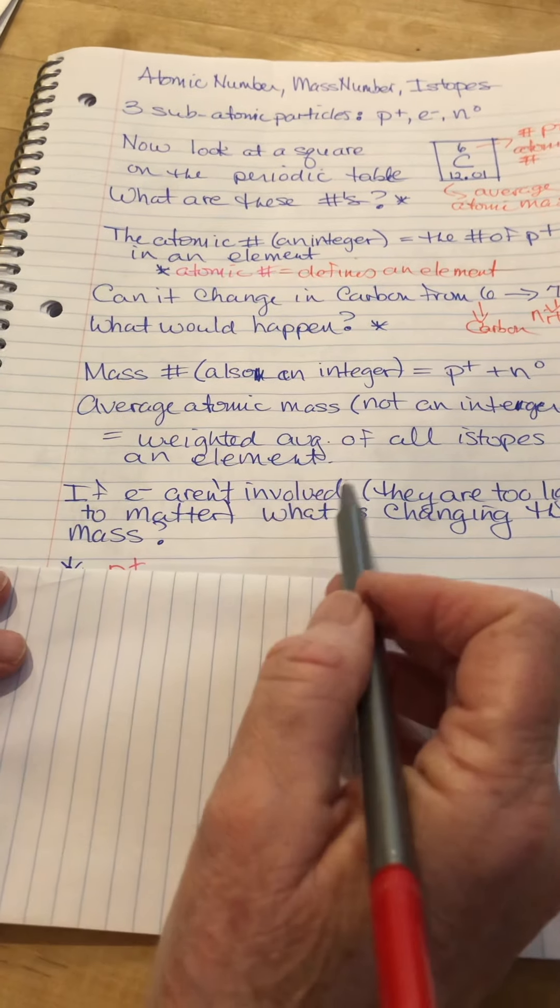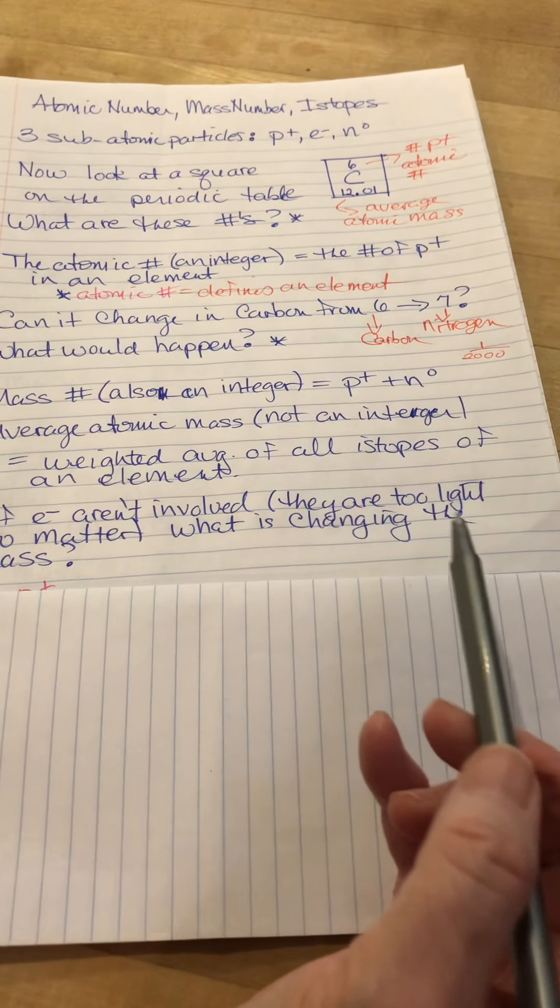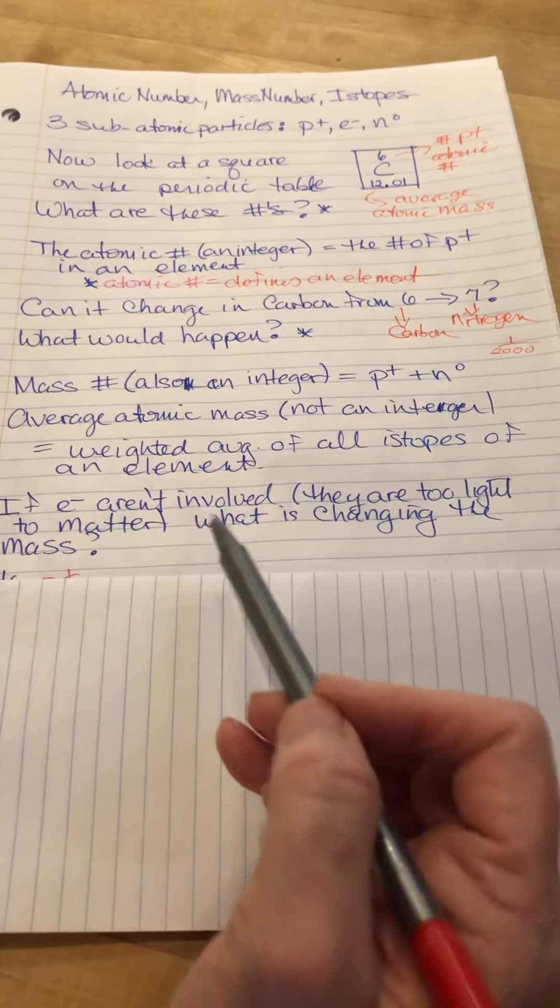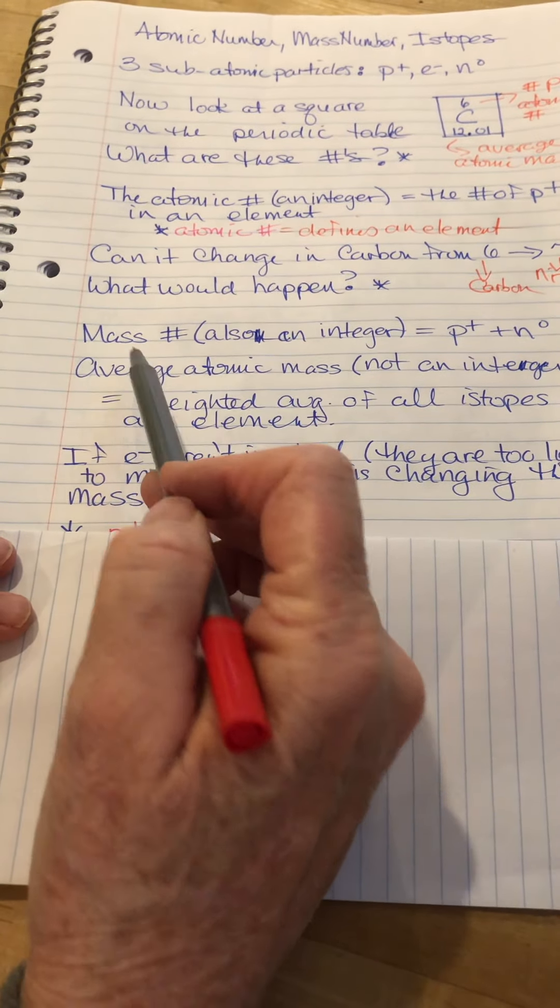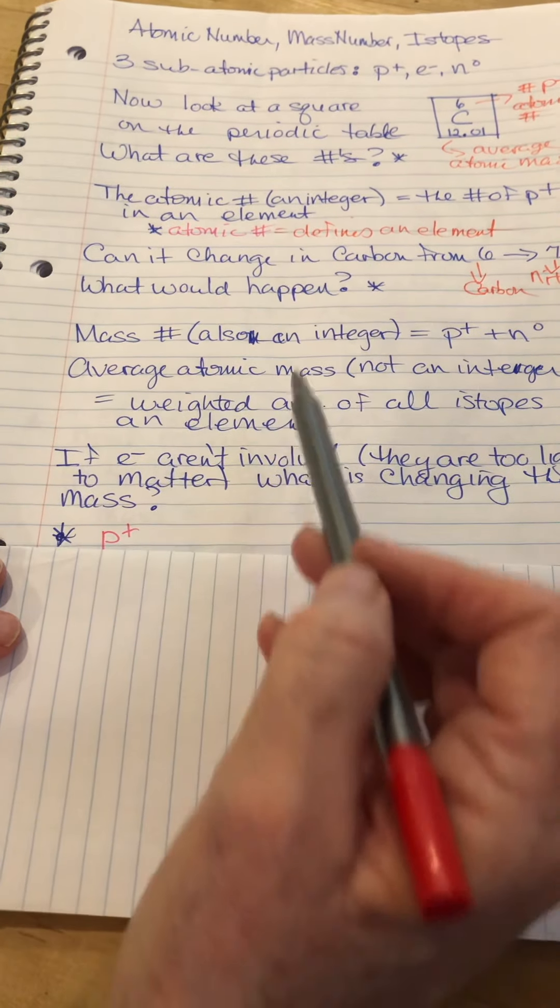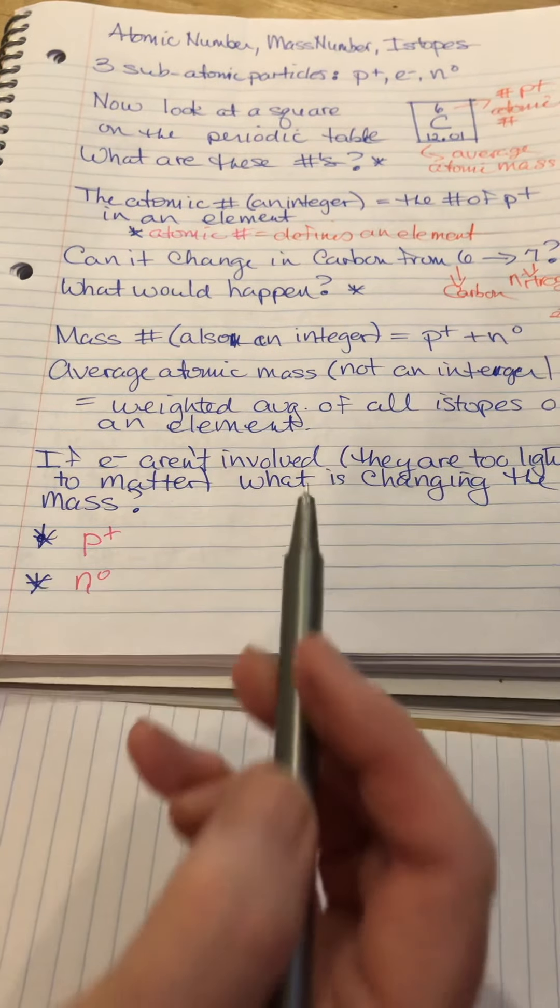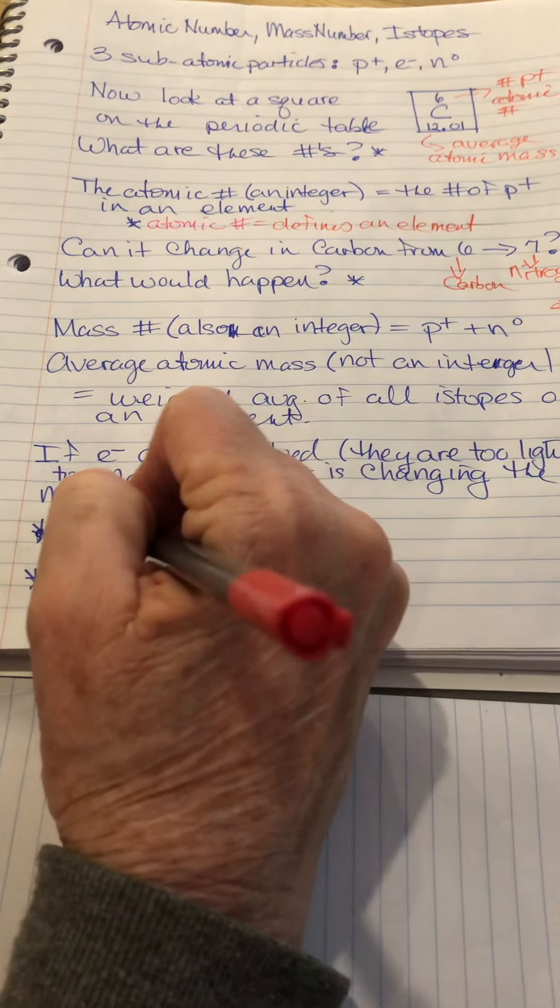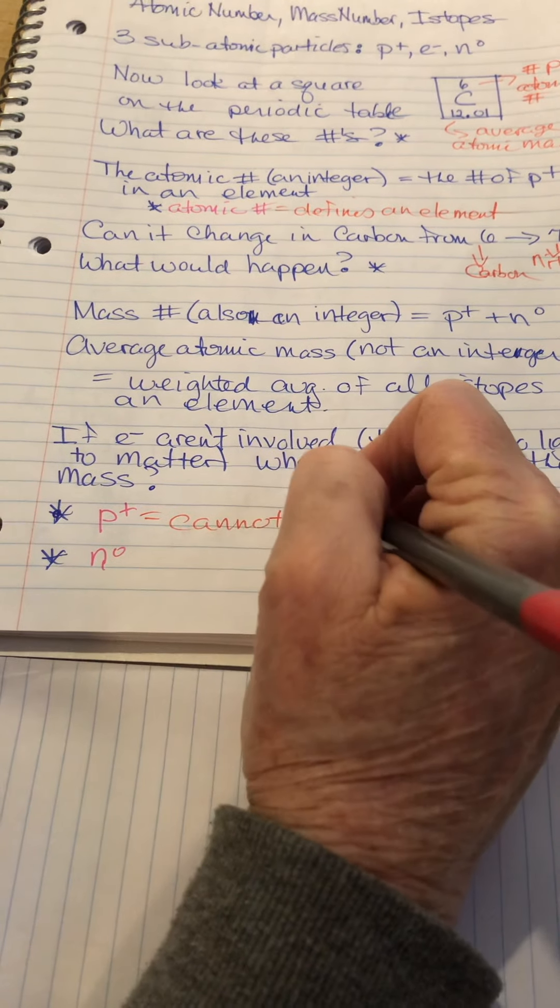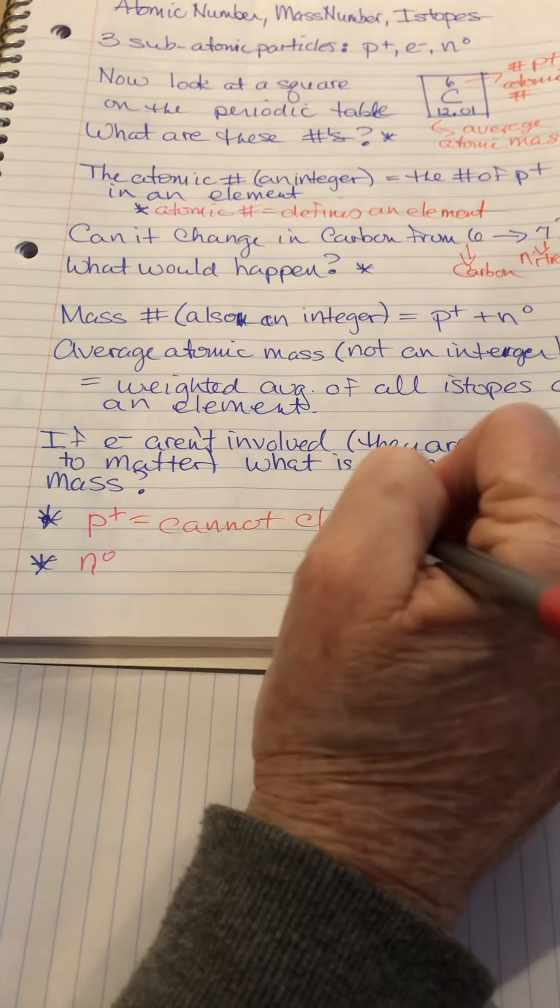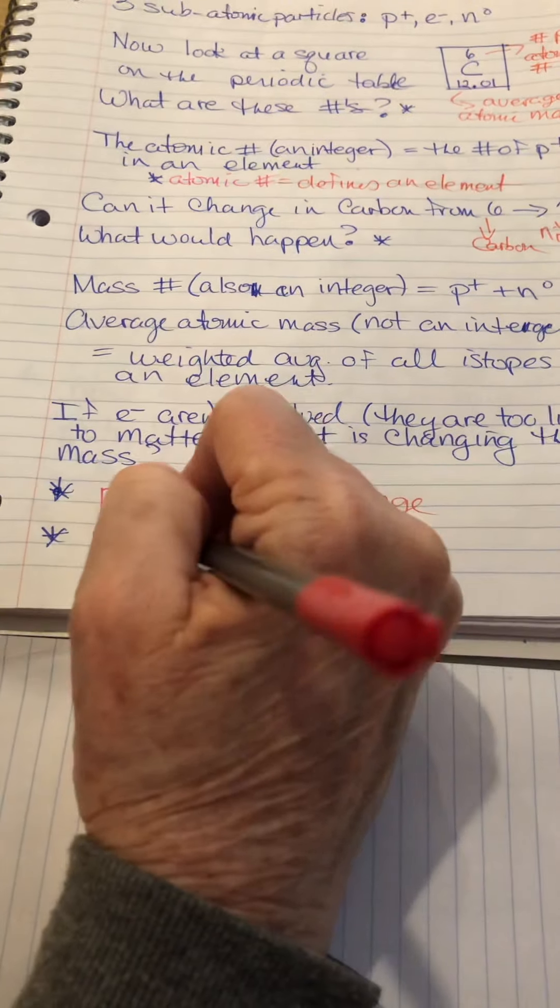So if electrons aren't involved because they're too light to matter, what is changing this average atomic mass? What's making it go up and down? Or what is causing there to be isotopes? The protons cannot change if we're talking about a particular element, but the neutrons can change.